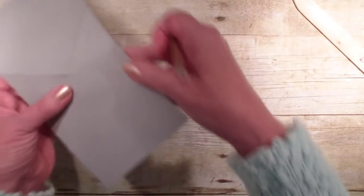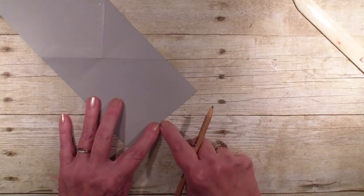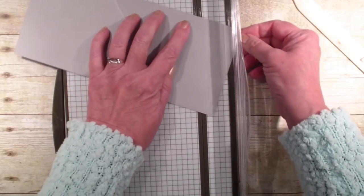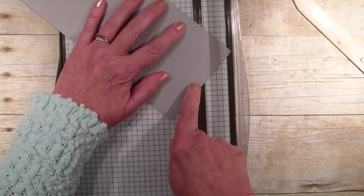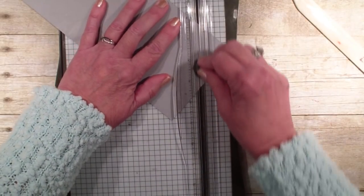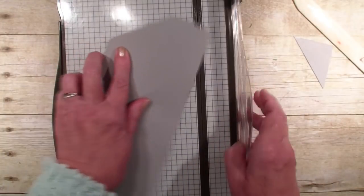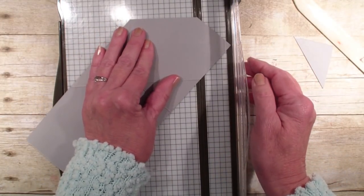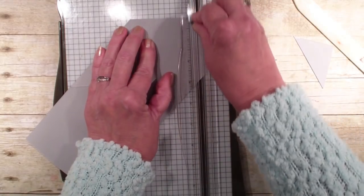And now what we're going to do is we're going to cut from this dot to the edge of our score line. So again, bring in that trimmer, lay that score line down, and with that dot, we're going to cut. Bring it over this way, line it up, and cut.